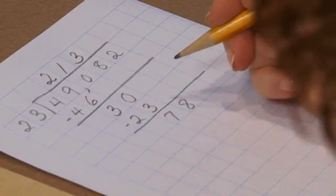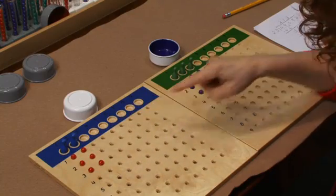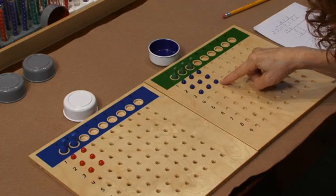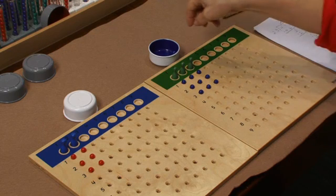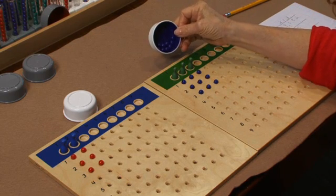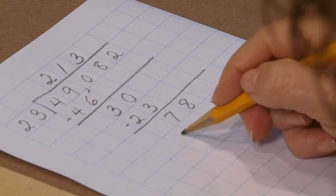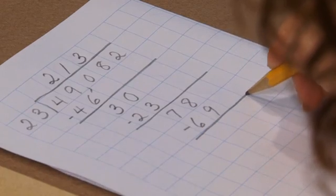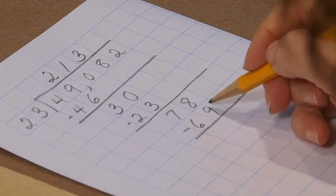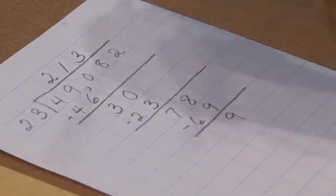And I also need to record what I used up. Six hundreds and nine tens. This looks like sixty-nine. And I have nine remaining in my cup. And I can subtract on paper. And that shows me that I should have nine remaining.